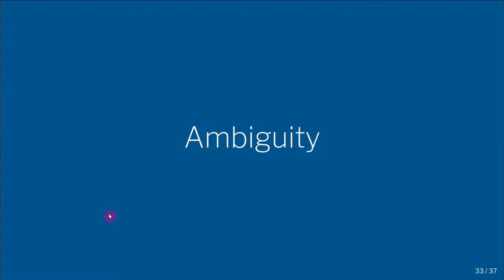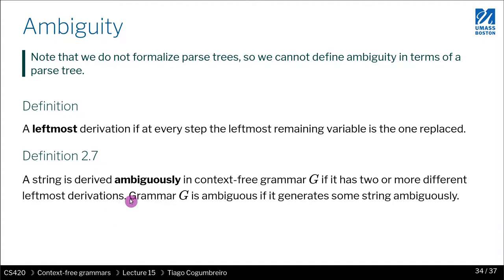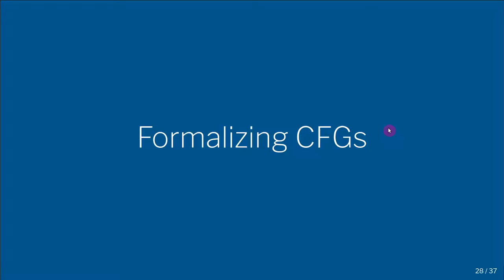So now let's formalize ambiguity. First, we need to introduce what is the leftmost derivation. The leftmost derivation is one where you always reduce or substitute the leftmost remaining variable. If you recall the slides...